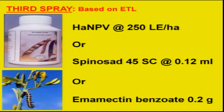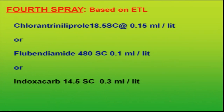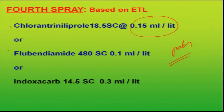If NPV is not available, two more insecticides that are safe — greener molecules — are recommended at very low dosage: 0.12 ml per liter of water or 0.2 grams per liter of water. As a fourth spray, because this stage involves larvae feeding on developing pods inflicting maximum damage, some of the most effective new molecules have been recommended by scientists across the country. These are also greener molecules, and the quantities recommended are very low compared to conventional insecticides where 2 to 5 ml per liter was used.